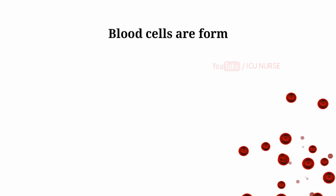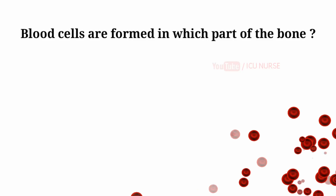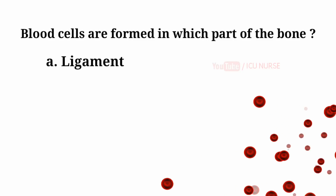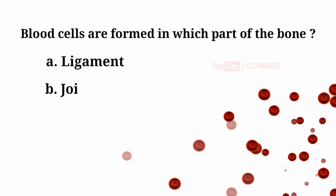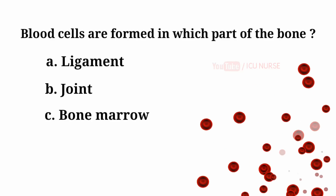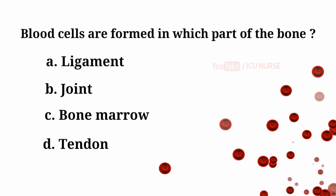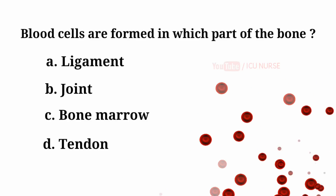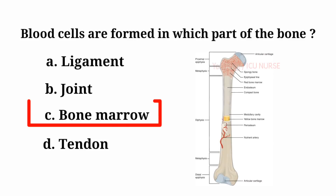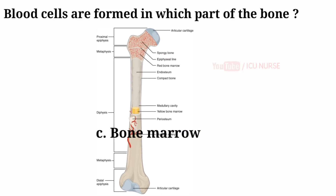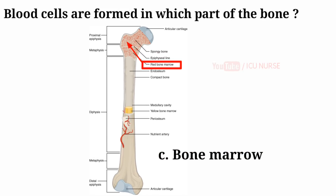Blood cells are formed in which part of the bone? A. Ligament, B. Joint, C. Bone marrow, D. Tendon. And the answer is C. Bone marrow. Blood cells are formed in bone marrow of the bone.